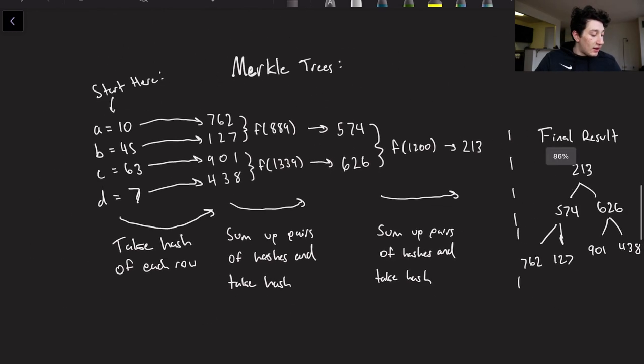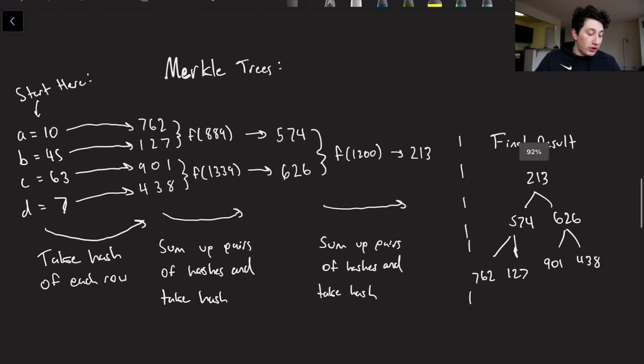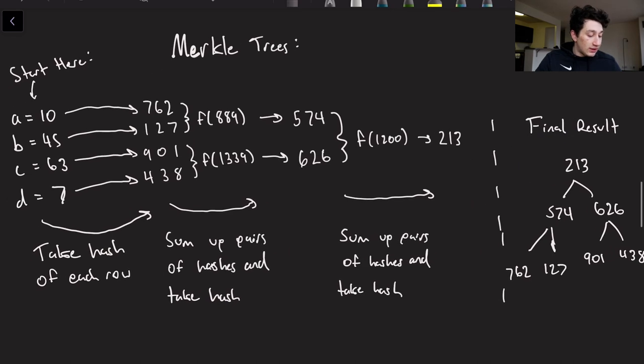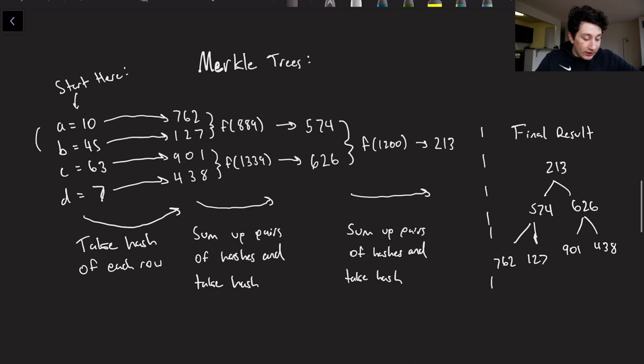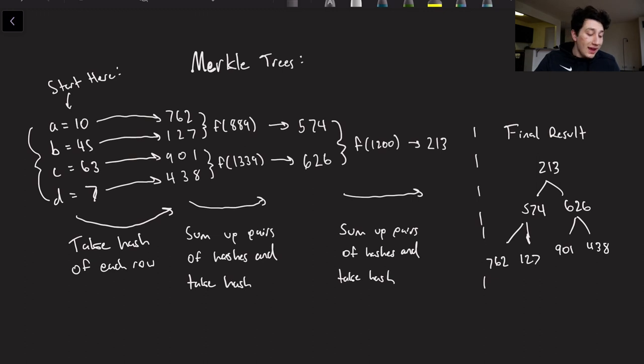So what can we do instead that's better? Well, it's time to introduce a concept known as the Merkle tree. So I've spoken about this in the past on my channel, but for the new series obviously we're going to reintroduce it. So here's how a Merkle tree would work. Let's imagine we have a database that looks like this right here. So we've got four rows and basically it's a key-value pair of A equals 10, B is 45, C is 63, and D is 7. So I'll explain how these Merkle trees work in a little bit, but the general gist is that you want to use them to tell how two database tables differ really quickly and efficiently.